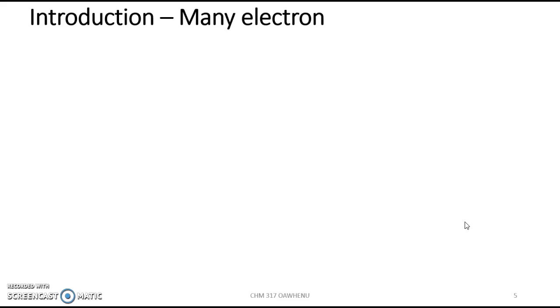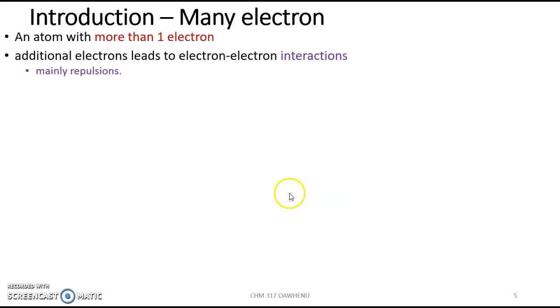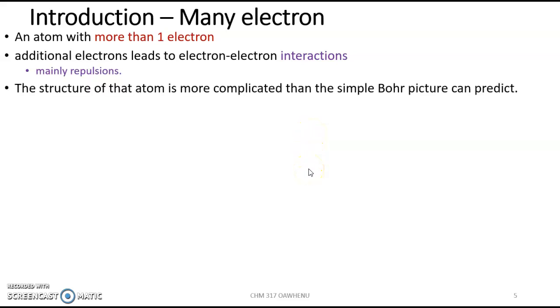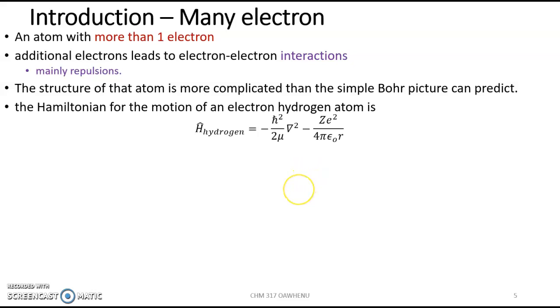Now, for many electrons, things get more complicated with more than one electron. There are other attractions, there are other interactions that come up. And the one that's mostly complicated is the repulsion. The simple Bohr expression cannot explain the spectra of the atom. And we're faced with the Schrödinger equation again.